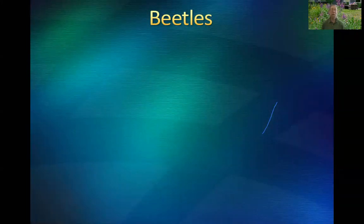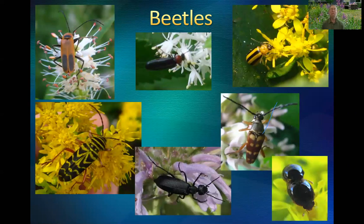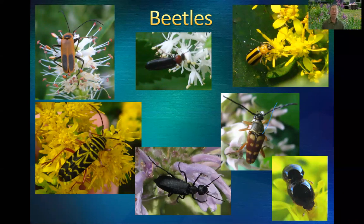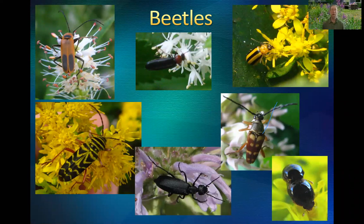There are also beetles you'll find frequently on flowers. There's actually a whole group called flower longhorn beetles — two of them appear in this montage: a yellow and black striped one on the lower left and a banded one in the center right. But there are many other beetles you'll find on flowers.